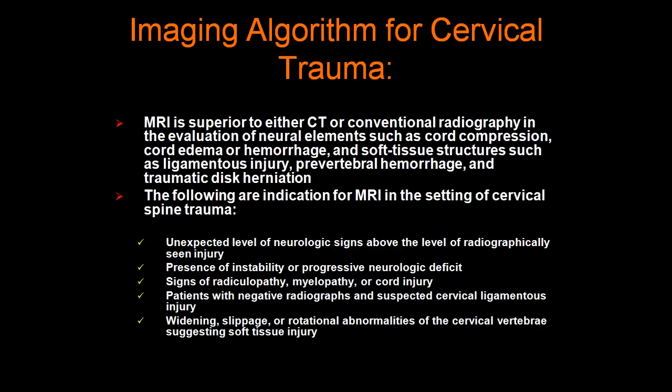MRI is superior to either CT or conventional radiographs in the evaluation of neural elements such as cord compression, cord edema or hemorrhage, and soft tissue structures such as ligamentous injury, prevertebral hemorrhage, and traumatic disc herniation. Indications for MRI in cervical spine trauma include: an unexpected level of neurologic injury above the radiographically seen injury; instability or progressive neurological deficits; signs of radiculopathy, myelopathy, or cord injury; patients with negative radiographs and suspected cervical ligamentous injury; and widening, slippage, or rotational abnormalities of the cervical vertebrae suggesting soft tissue injury.